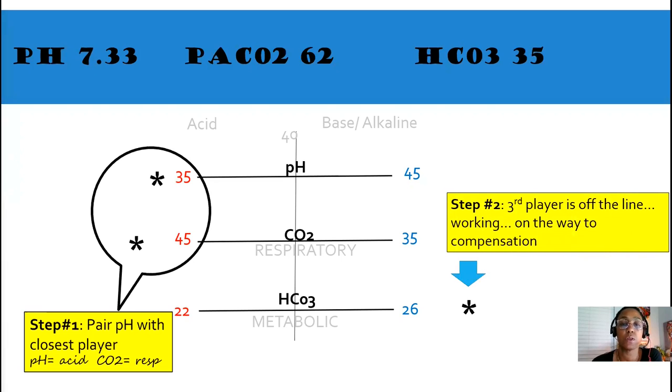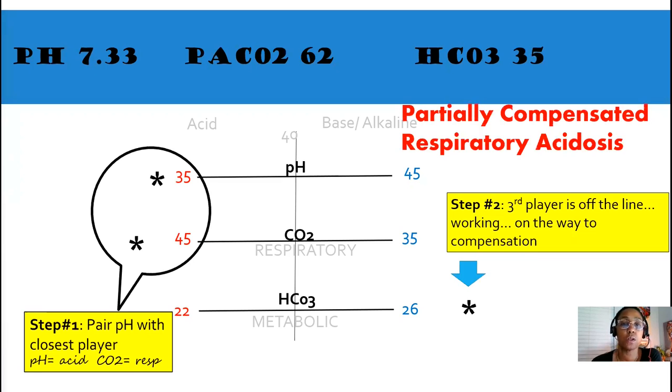Step number two. Look to see what the third player is doing. In this case, bicarb is off the line. It's working on its way to compensation. Our interpretation of this ABG is partially compensated respiratory acidosis.